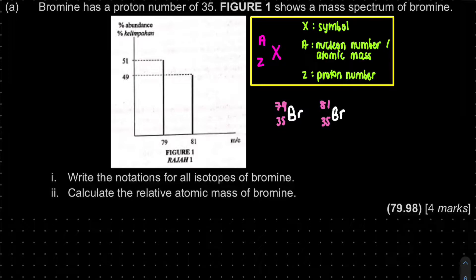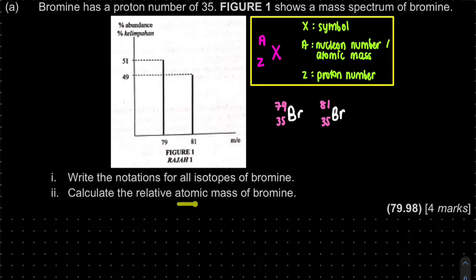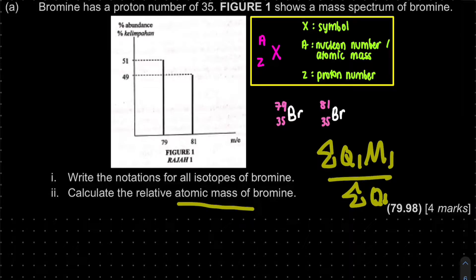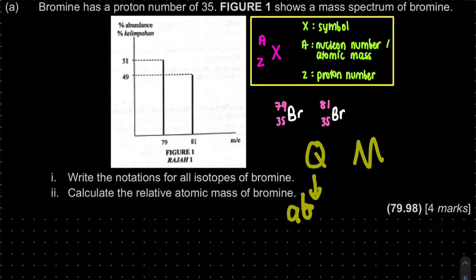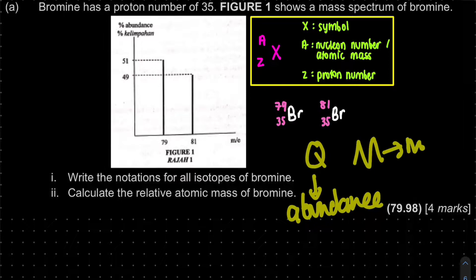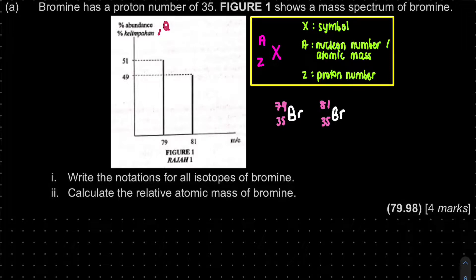Question 2: calculate the relative atomic mass of bromine. The formula is the sum of (k_i × m_i) divided by the sum of k_i. From the mass spectrum, Q represents abundance (the y-axis) and M is the isotopic mass (the x-axis). So Q₁ = 51 with M = 79, and Q₂ = 49 with M = 81.